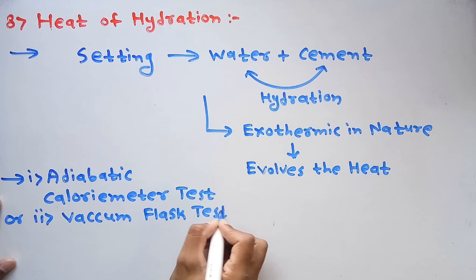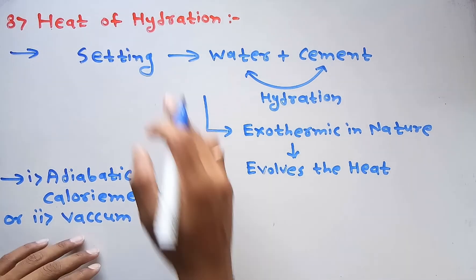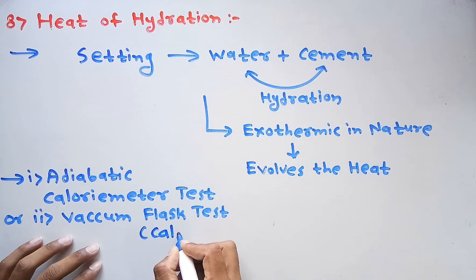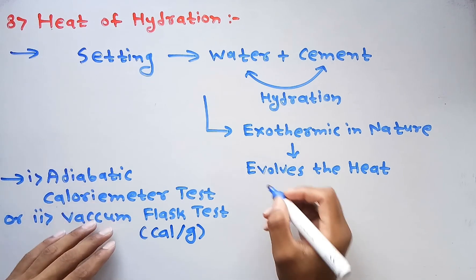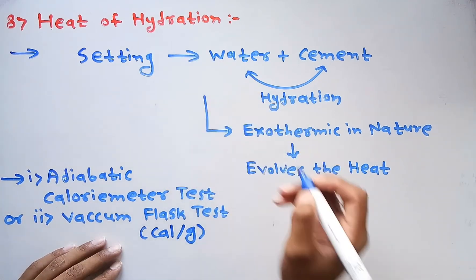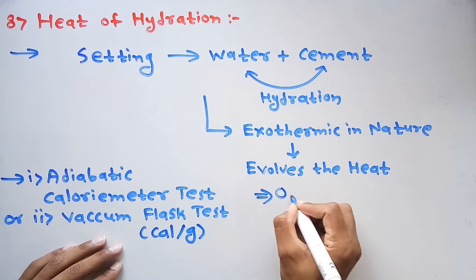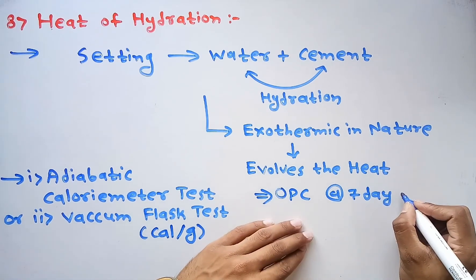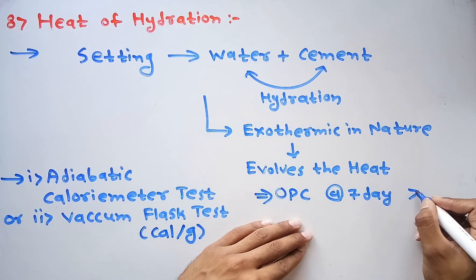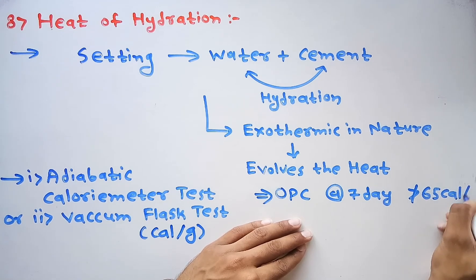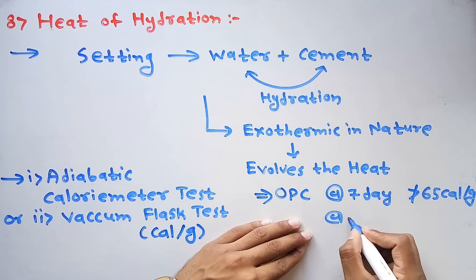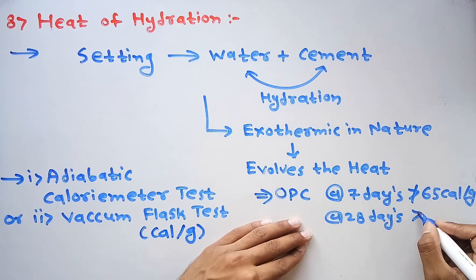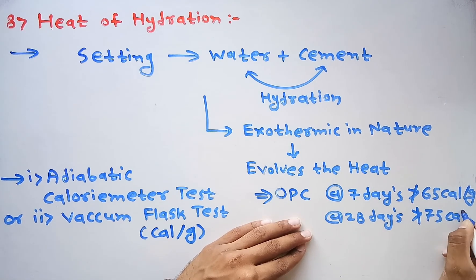The heat of hydration that evolves is measured in calories per gram. To achieve good quality cement, for OPC, the heat of hydration at seven days should be less than 65 calories per gram, and after 28 days it should be less than 75 calories per gram.